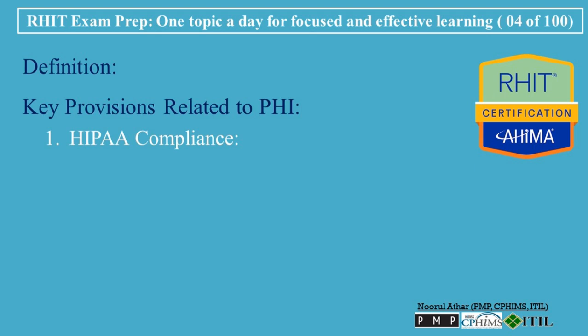Key Provisions Related to PHI. 1. HIPAA Compliance: Under the Health Insurance Portability and Accountability Act, HIPAA, PHI is protected to ensure the privacy and security of individuals' health information. Covered entities must implement safeguards to protect PHI from unauthorized access and disclosure.